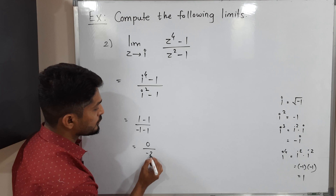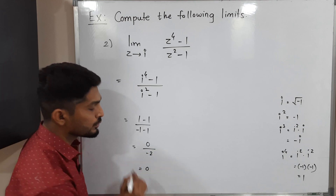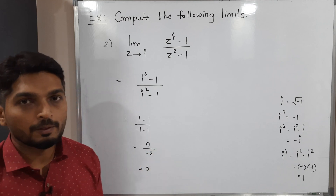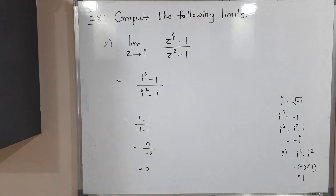So 0 is the required limiting value for the second example. Make a screenshot of it. Thank you, see you.